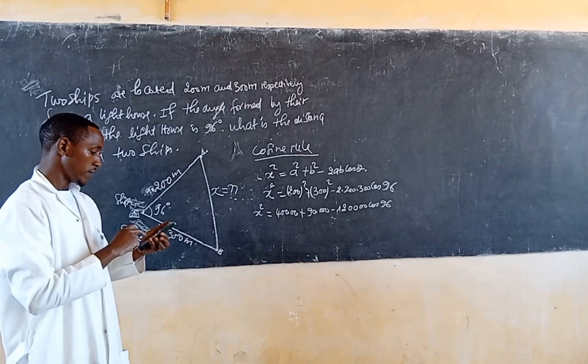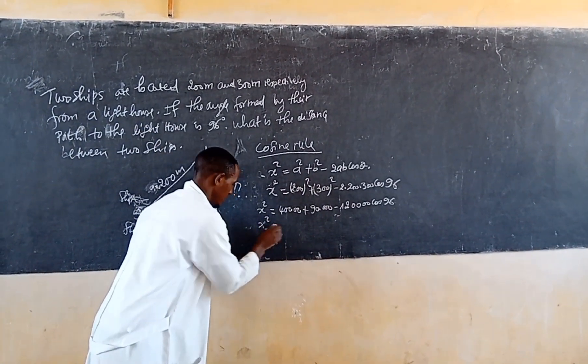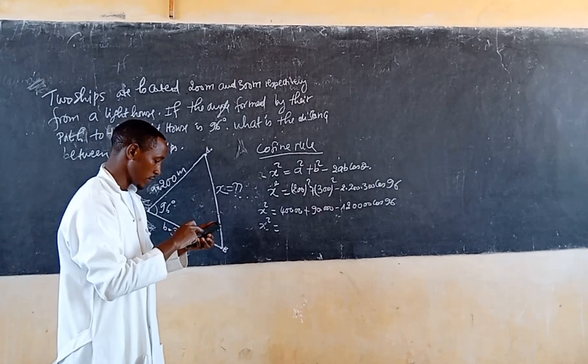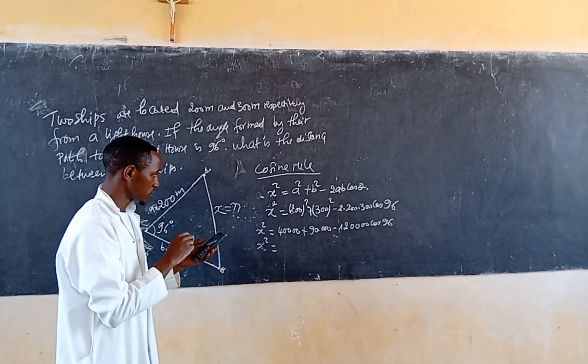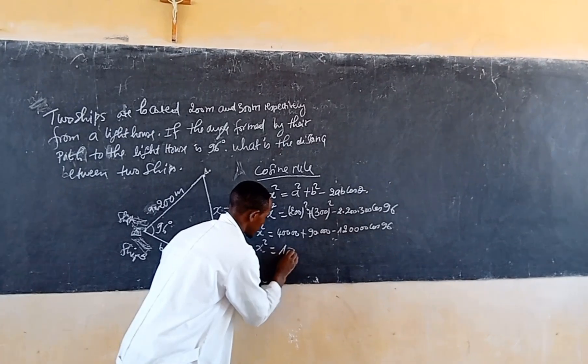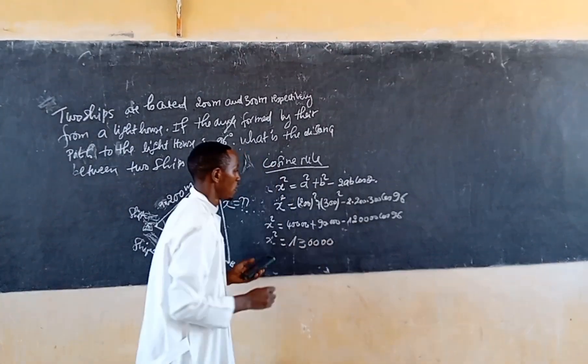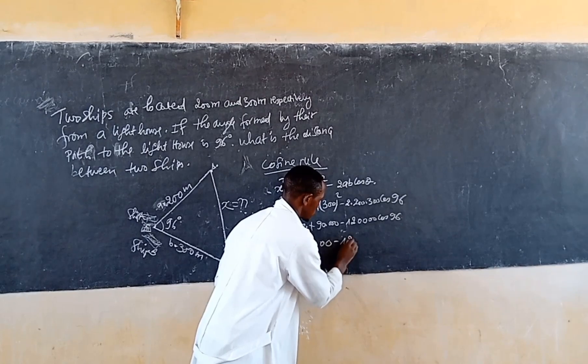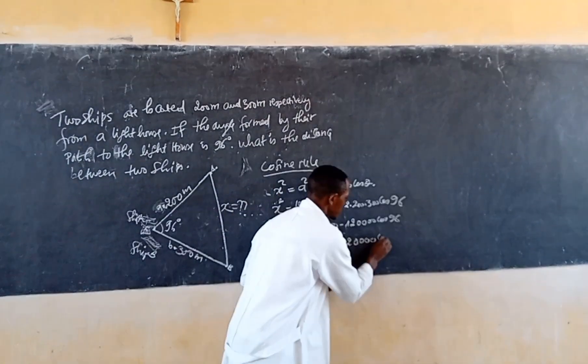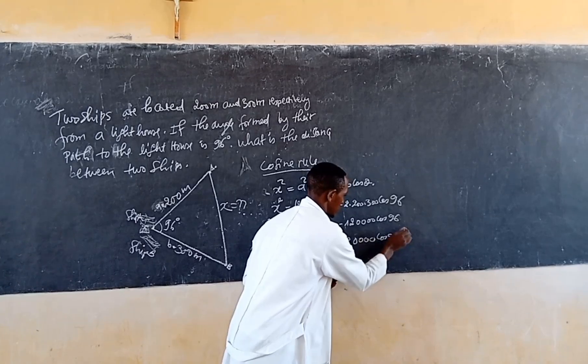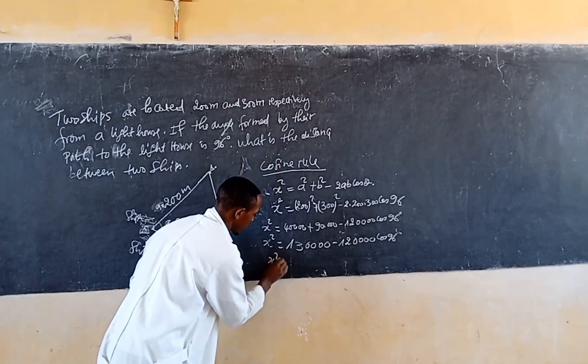So then x square is what? This becomes equal to 40000 plus 90000 minus 120000 cosine of 96. So then x square is what? x square is equal, using the calculator,